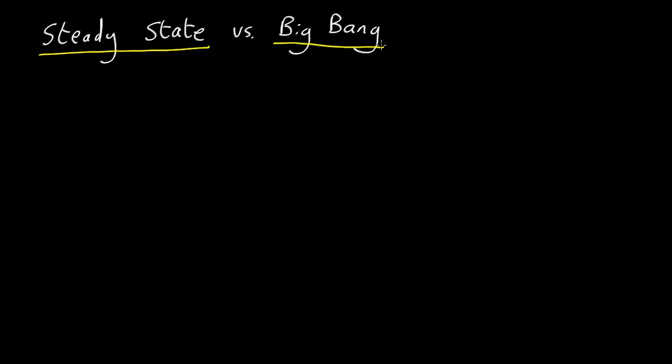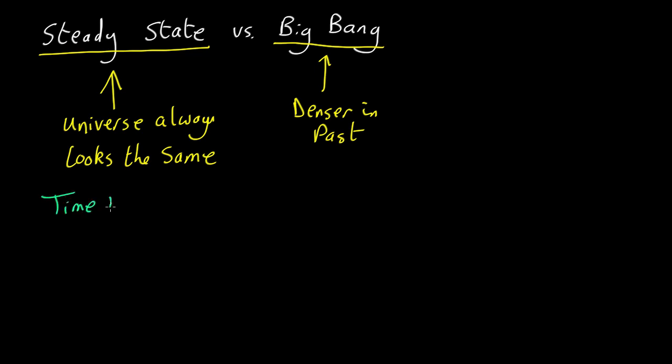There's a very clear test of these two models. The steady-state theory says the universe should always look the same, whereas the Big Bang theory says the universe should have an ever-decreasing density. So, in principle, it's very easy to tell the difference. We just need a time machine. We look around today, see what the universe looks like, then go back in time a few billion years. If it was denser in the past, that's the Big Bang theory. If it looks exactly the same, steady-state theory.